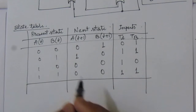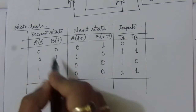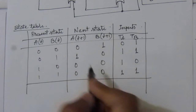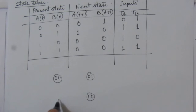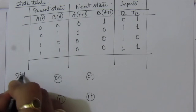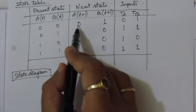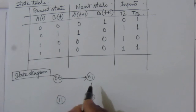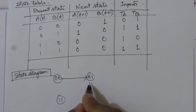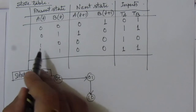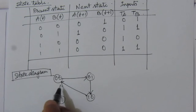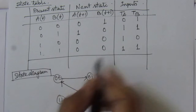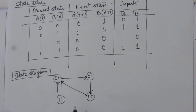Now let us draw the state diagram. We have four states: 00, 01, 10, and 11. Using the state table, we show the transitions: from state 00 we go to 01; from 01 we go to 10; from 10 we go to 00; and from 11 we also go to 00. The arrowhead points towards the next state. This is the state diagram for the given circuit.